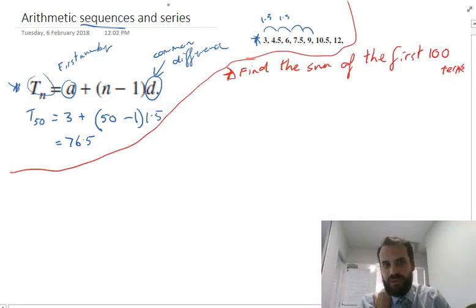You might also get asked about an arithmetic series. An arithmetic series is the sum of the terms: 3 plus 4.5 plus 6 plus 7.5 plus 9. You might get asked to find the sum of the first 100 terms.